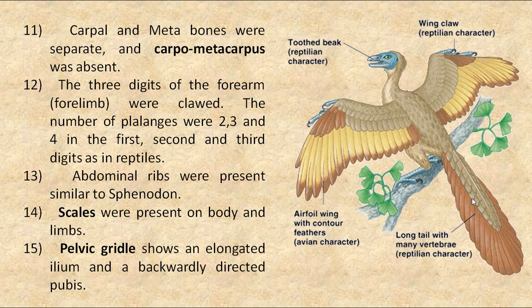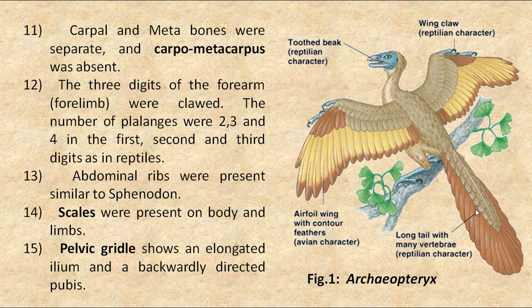This figure of Archaeopteryx more or less looks like a bird, but as we discussed, it shows reptilian characters such as homodont teeth in the beak, clawed wings, and a long tail with many free vertebrae.